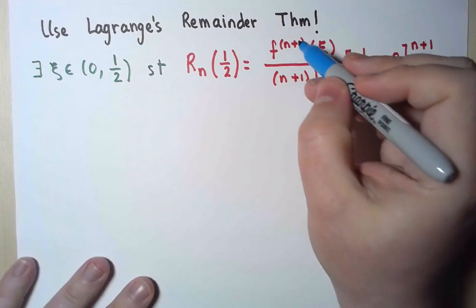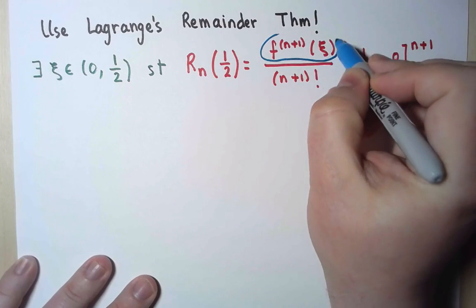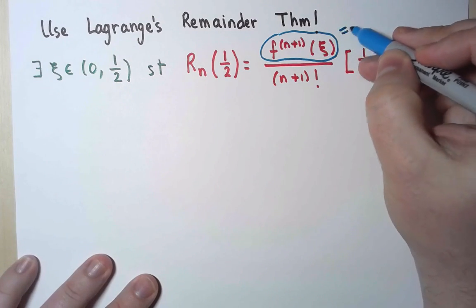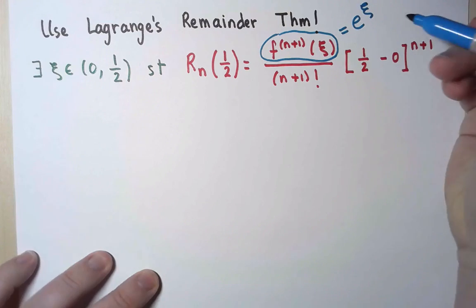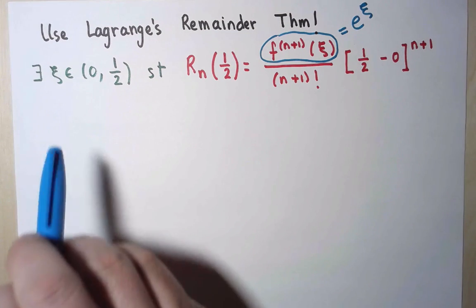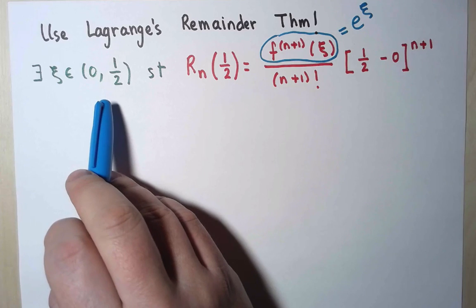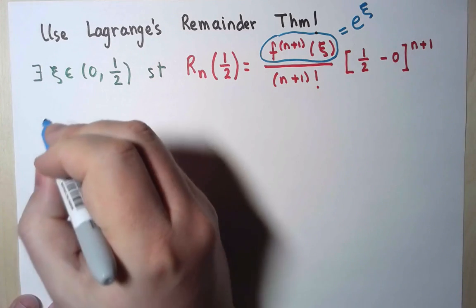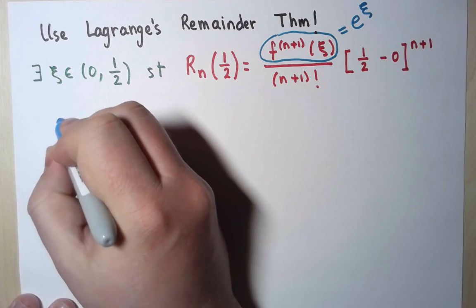Now in this case, the function I'm looking at is the exponential, and all derivatives of the exponential are the same, so the n plus first derivative is simply e to the xi. I don't know what xi is exactly, I just know it's a number between 0 and 1/2. Now, I also don't need to know what the remainder is exactly, I just need to bound it.